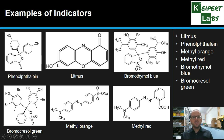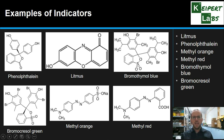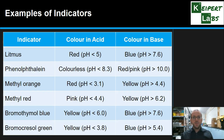Here we can see the chemical structures of these six different compounds. You'll never need to draw these, but I want to show you that we use them as acid-base indicators yet their structures are wildly different. The only two closely related are methyl orange and methyl red — the difference is a sulfate group. The key point is that part of each compound's structure will change depending on whether the solution is acidic or basic, and each indicator changes colour over a known pH range.